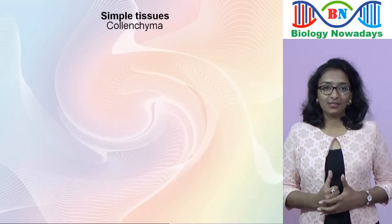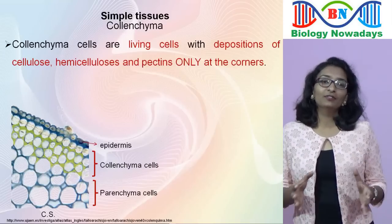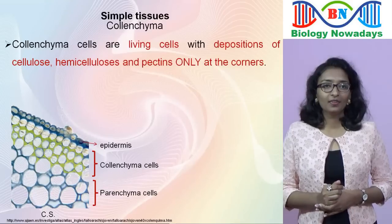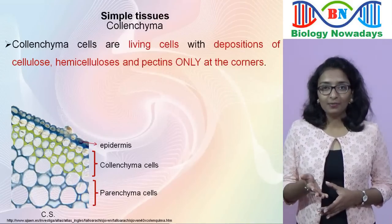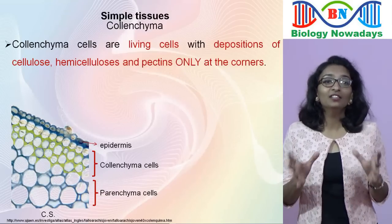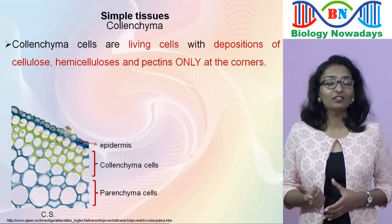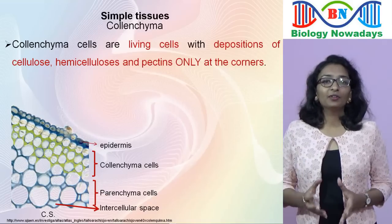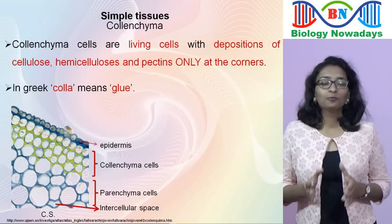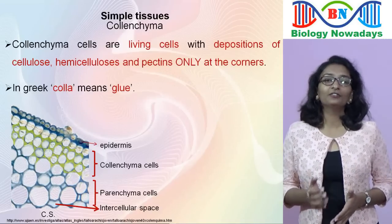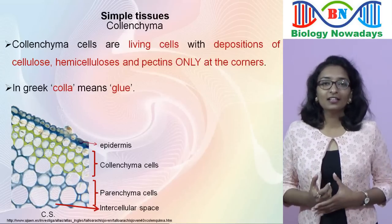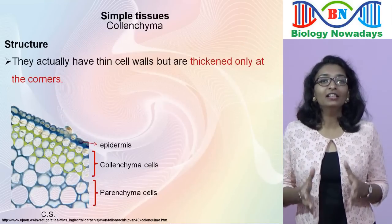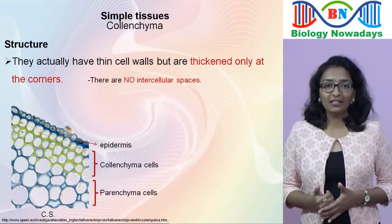Now let's see what colenchyma tissue is. The cells of colenchyma tissue are also living cells, which have depositions of cellulose, hemicellulose and pectin only at the corners of the cells. In a comparison picture, the parenchyma cells have thin walls, while the thickenings of the colenchyma cells are at the corners. Colenchyma is derived from the Greek word 'kola' meaning glue, referring to their characteristic thick, shining walls seen in fresh tissue. Since they have thickened cell walls at corners, their primary function is to give mechanical support. Because of the corner thickening, there are no intercellular spaces in colenchyma.